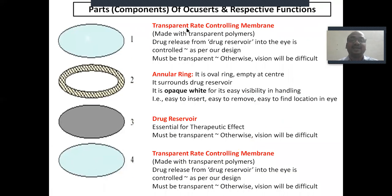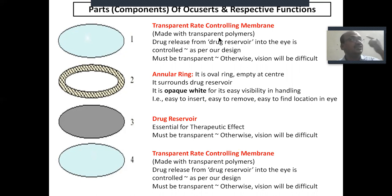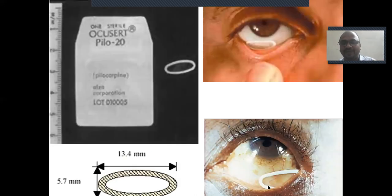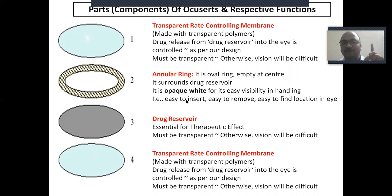The four layers of the accusert are very, very important. Layers one and four are the same — transparent rate-controlling membranes. They are made transparent because they must allow vision. Drug releases from the drug reservoir through this rate-controlling membrane as per the design. Layer two is the annular ring, also called opaque white, which is made of titanium dioxide. Layer three is the drug reservoir, which is essential for the drug treatment.